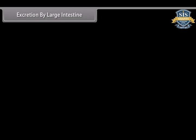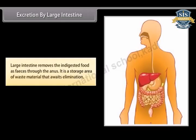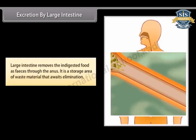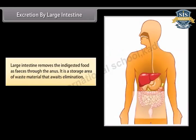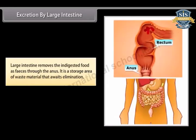The large intestine removes undigested food as feces through the anus. It is a storage area of waste material that awaits elimination.